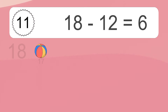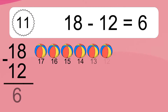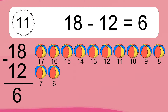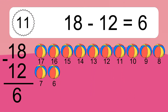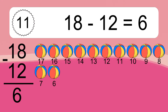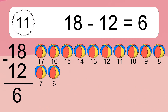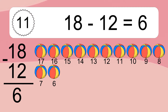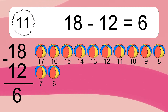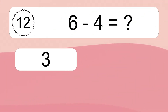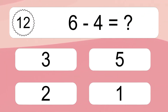18 minus 12 equals what? 18 minus 12 equals 6. Let's count it: 17, 16, 15, 14, 13, 12, 11, 10, 9, 8, 7, 6.